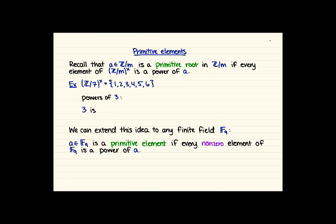So looking at this we've got 3 to the 1 is 3, 3 squared is 2, 3 cubed is 6, 3 to the 4th is 4, 3 to the 5th is 5, so all this arithmetic is happening mod 7, and 3 to the 6th is 1. So we see that we got everything in that multiplicative group as a power of 3, which means that 3 is a primitive root mod 7.